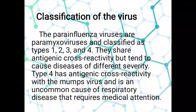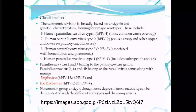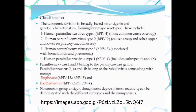The para-influenza viruses are paramyxoviruses, classified as types 1 to 4. They share antigenic cross-reactivity but tend to cause diseases of different severity. Type 4 has antigenic cross-reactivity with the mumps virus and is an uncommon cause of respiratory disease that requires medical attention. We have to be mindful of this disease, as mumps is an example of a virus with cross-reactivity to type 4 of this virus type. The classification details how this virus is categorized.